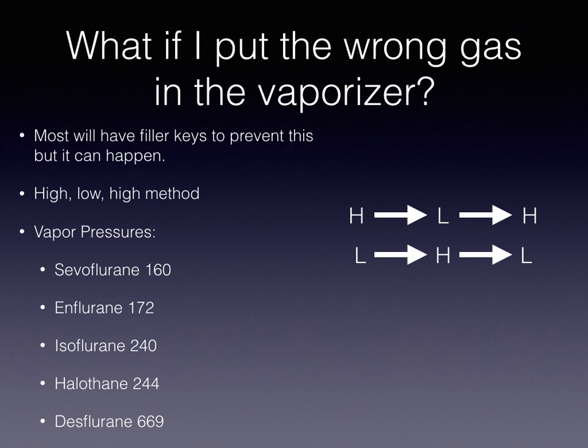Conversely, if you place isoflurane into a sevoflurane vaporizer, that will result in a higher-than-normal output than what is reflected on the dial, and you would need to adjust accordingly.